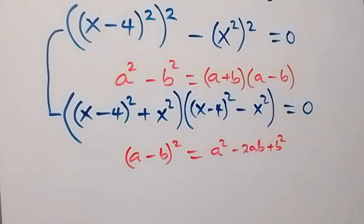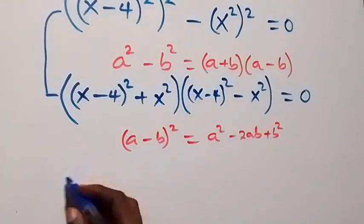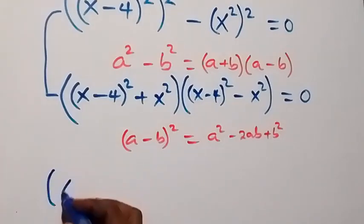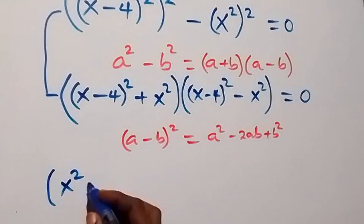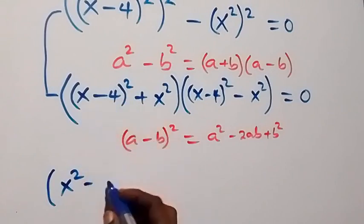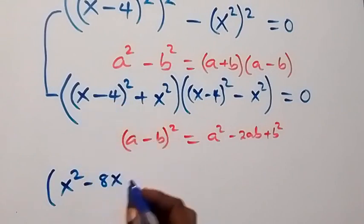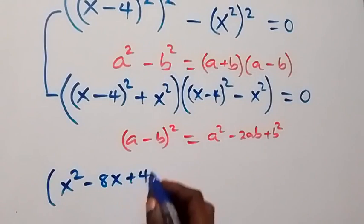Then from here we have, into the bracket: x squared minus 2 times 4 times x, which is minus 8x, then plus 4 squared.